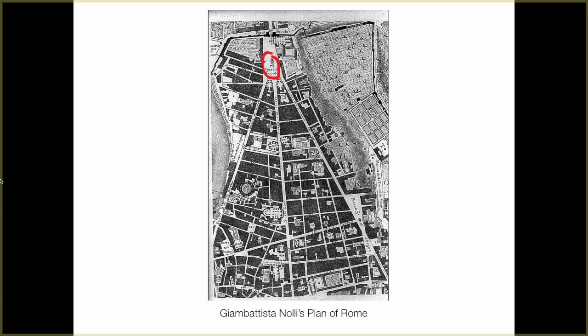The white and black represent public and private space. The streets are public — anybody can walk on them. Rome is full of churches; you can't go a block without finding one, and you can walk right into any church, so the insides of churches are public space. In this plan of Rome, you can see the plans of churches, streets, plazas, and all public spaces shown in white. The houses — the private spaces — are shown in black. So it's a plan of the public and private space of Rome, not just a plan of the city.